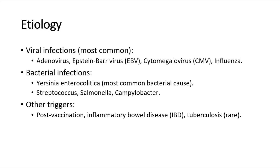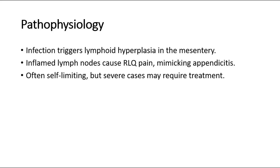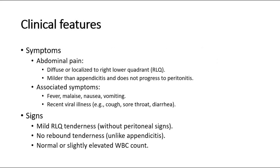Other bacterial causes include Salmonella and Campylobacter. Other triggers include post-vaccination reactions, inflammatory bowel disease, and tuberculosis. In terms of pathophysiology, infection triggers lymphoid hyperplasia in the mesentery. The inflamed lymph nodes cause right lower quadrant pain mimicking appendicitis. It is often self-limiting, but severe cases may require treatment.